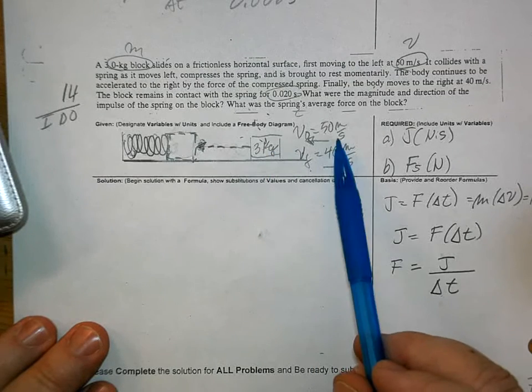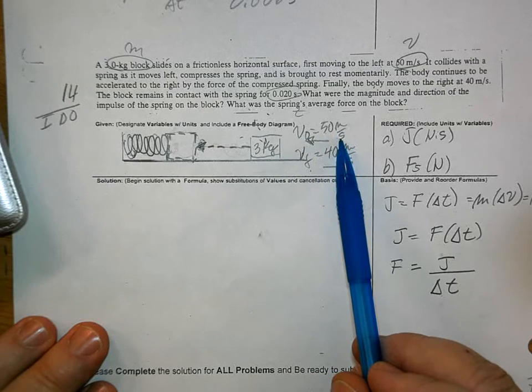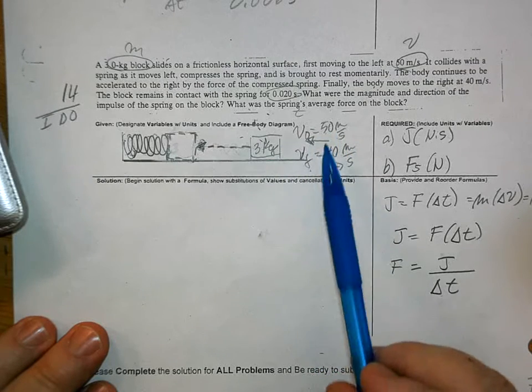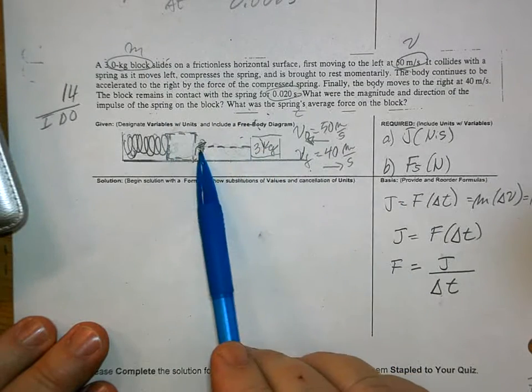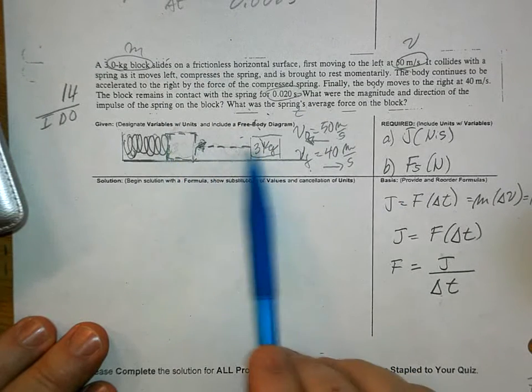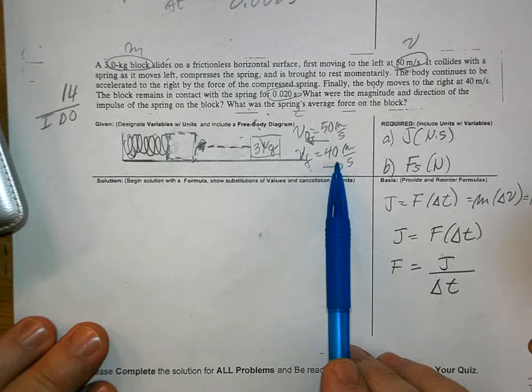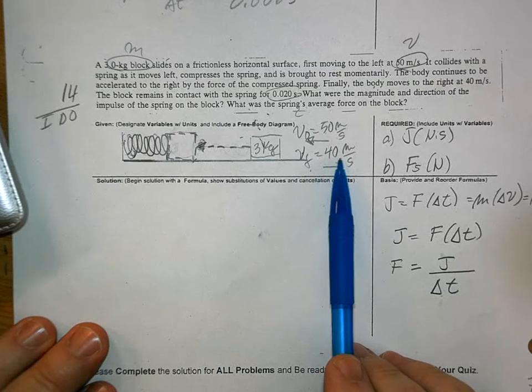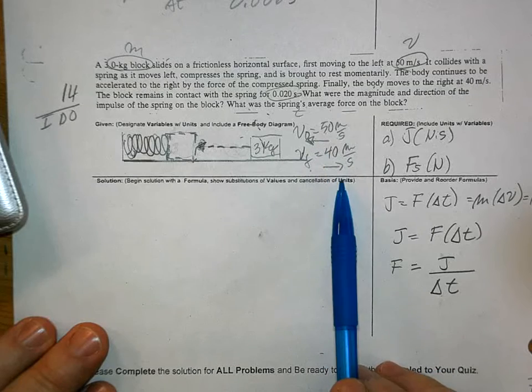In this problem, a block is moving in this direction at 50 meters per second. It weighs 3 kilograms. It hits a spring. The spring compresses and then it pushes back. And then the block, after leaving the spring, is now 40 meters per second, but look at that, it changes direction.